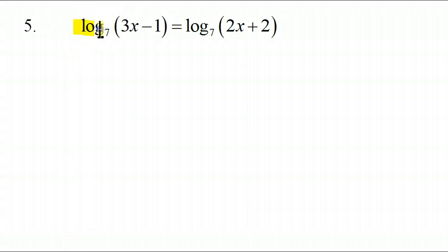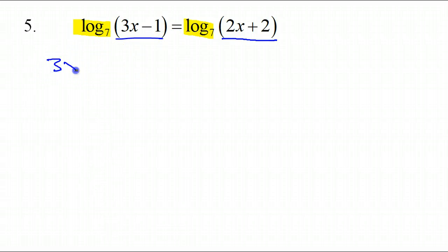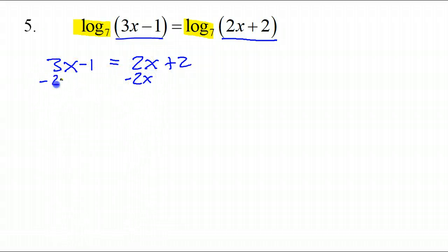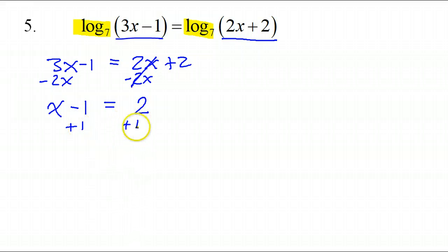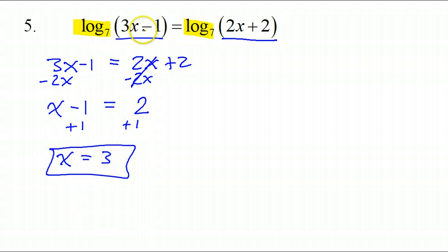If the logs are the same — including the base 7 — then the argument is the same. That blue part is called the argument. So 3x minus 1 is equal to 2x plus 2. When you have the variable on both sides, take care of that first. Subtract 2x from both sides — now we only have the variable on one side. 3x minus 2x is just x, so x minus 1 equals 2. Add 1 to both sides: x equals 3. Check: 3 times 3 is 9 minus 1 is 8; 2 times 3 is 6 plus 2 is 8. Good.